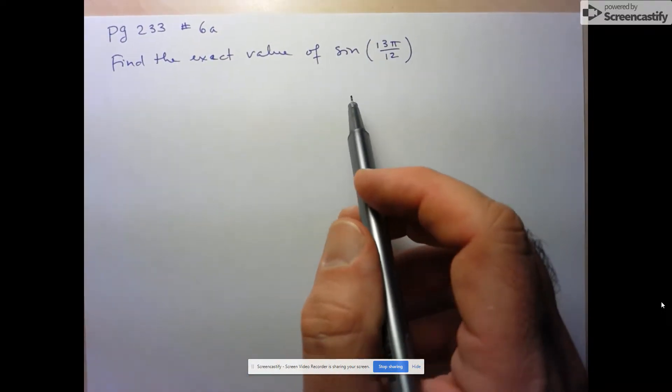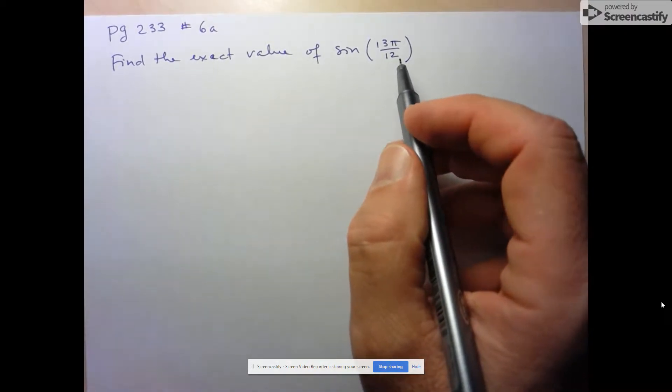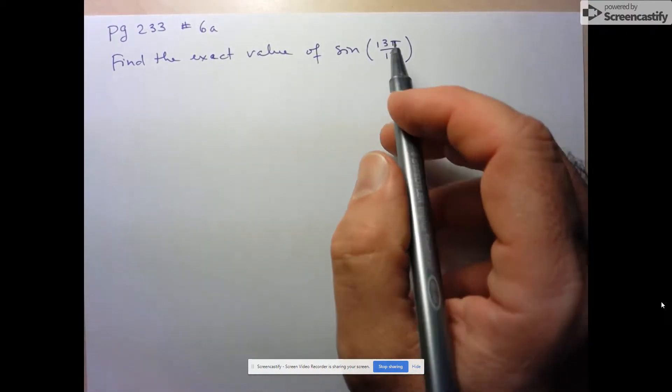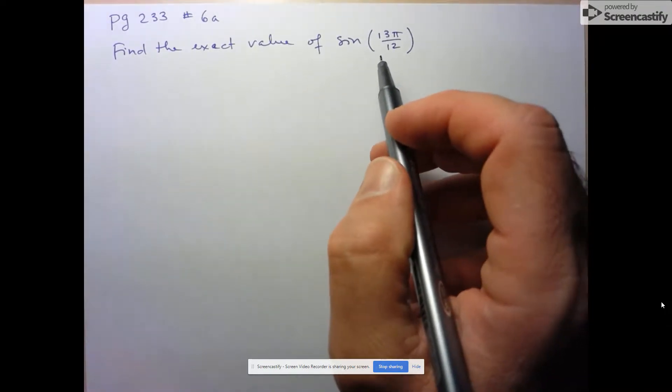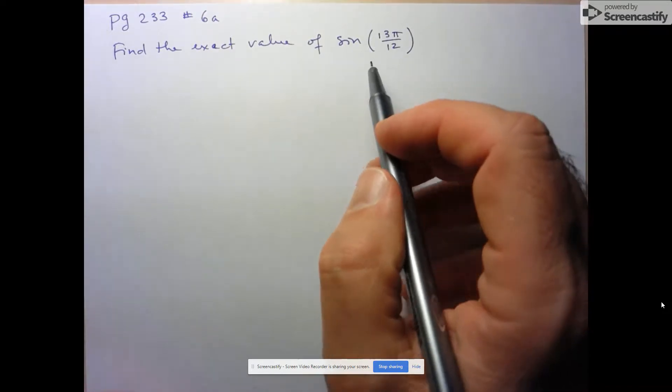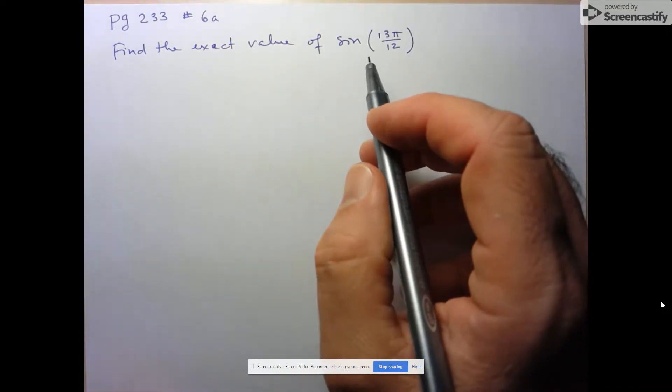First thing I noticed is that 13π over 12 is not itself a special angle, but the idea here is to relate it to some of our special angles, likely using a sum or difference so that we can apply our sum and difference identities.